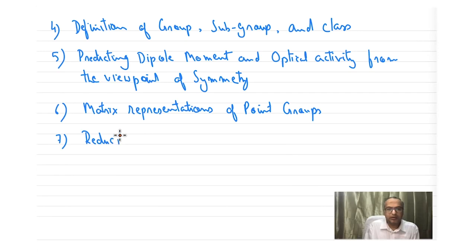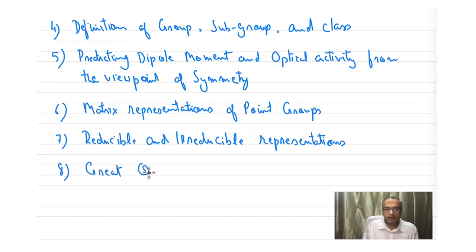Reducible and irreducible representations. One of the very important theorems in group theory is called the Great Orthogonality Theorem and its corollaries.